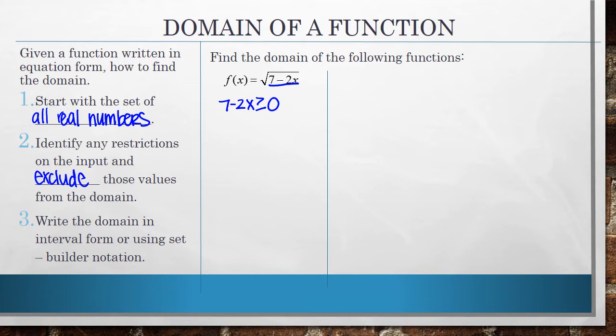Again, we have to exclude any values that are going to make this negative because it's not going to be defined. If I try to take the square root of negative 4, there's no solution. Solving this for x, I'm going to subtract 7 from both sides.